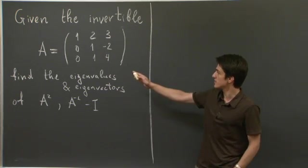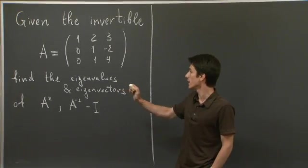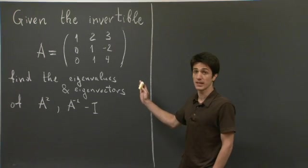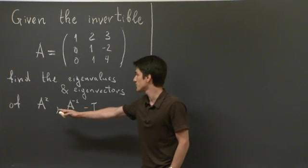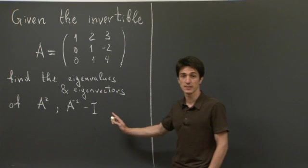We're given this invertible matrix A, and we'll find the eigenvalues and eigenvectors not of A, but of A squared and A inverse minus the identity.